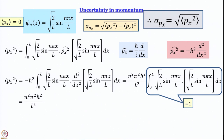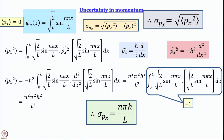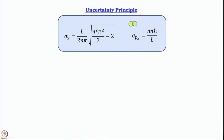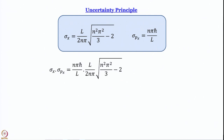σ_px is just the square root of this, giving the simple expression nπℏ/L. We have now determined both the uncertainty in position and the uncertainty in momentum. Multiplying them together: σ_x = (L/2nπ) · √(n²π²/3 − 2) and σ_px = nπℏ/L. Multiplying these, L and L cancel, nπ and nπ cancel, leaving (ℏ/2) · √(n²π²/3 − 2).